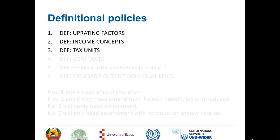There's a definitional policy on tax units, which describe the composition of households. If there are special definitions of other groupings within the household, they're contained in these tax units — so a couple may be defined in a tax unit, or a family as a subset of a household. Constants are things that don't change within the model. It's where values of benefits are often put, where tax bands and tax rates may be put. It makes it much easier to update the model if you've got those figures as constants rather than hard-coded.